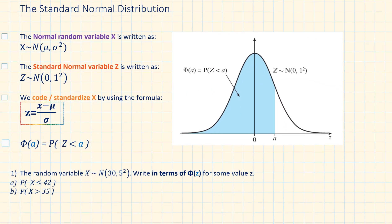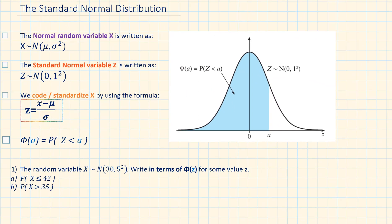Standard Normal Distribution. In previous lessons we have seen that the normal random variable X is written as X is normally distributed with a mean of μ and variance σ². In this lesson we will learn how to standardize these.